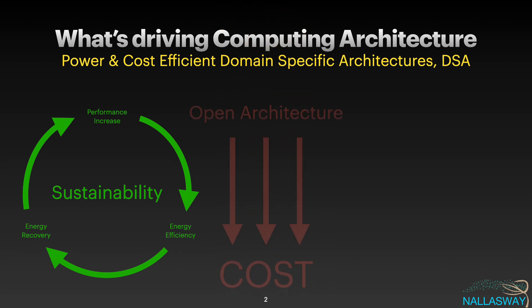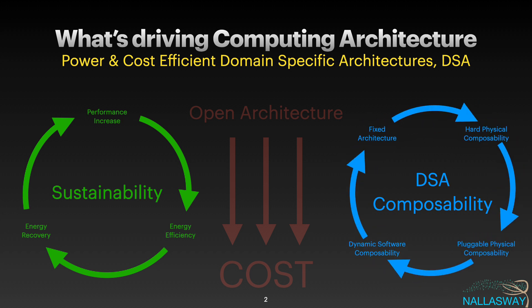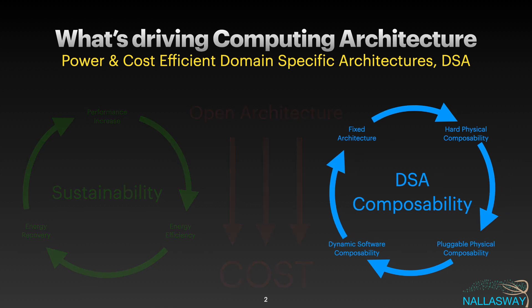Secondly, we need to drive down the cost, and we can do this with open architectures that allow much more of a democratisation of our industry — and that's what we're doing in OCP. And finally, we need to execute on domain-specific architecture composability, so we can build compute machines and wire them together as efficiently as possible for a given application's needs. I'm going to take a closer look at the composability aspects.